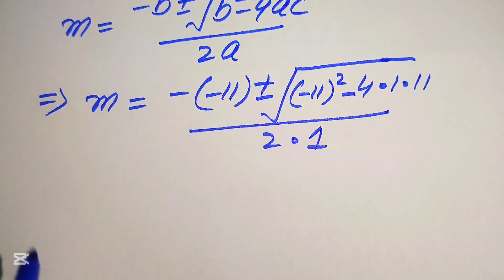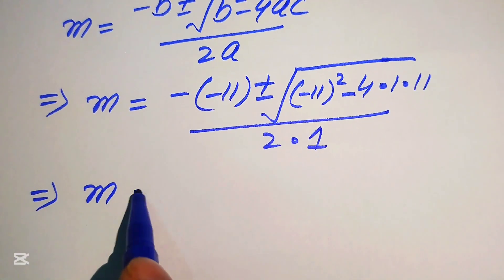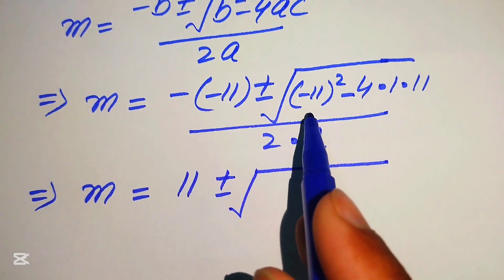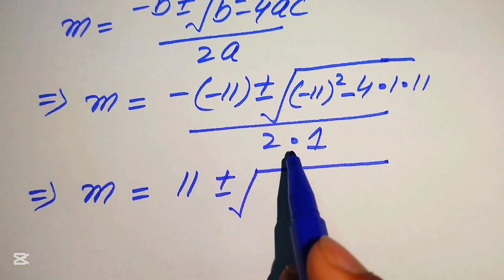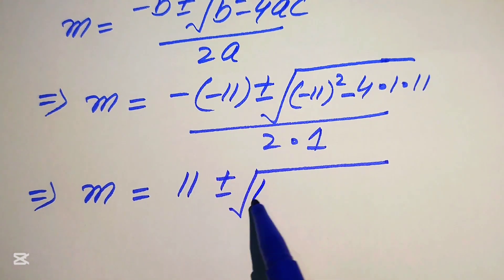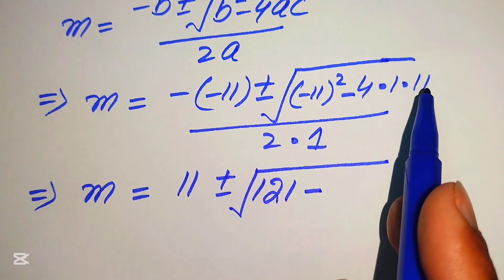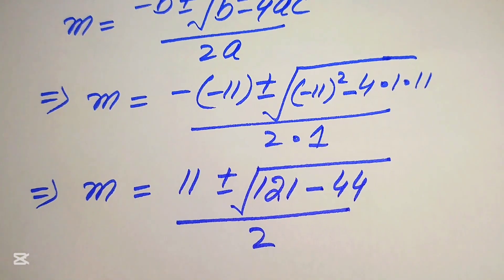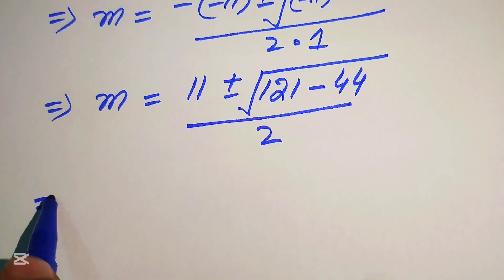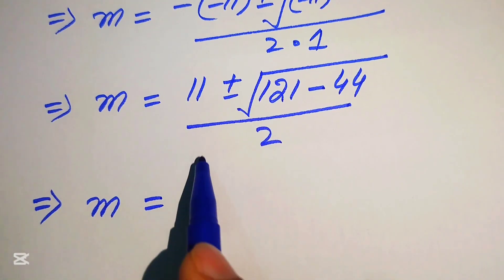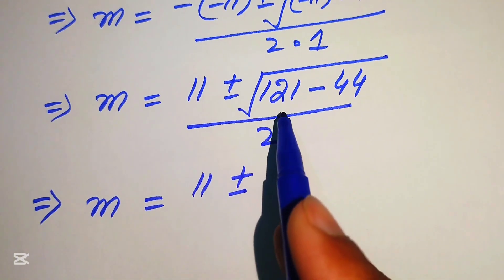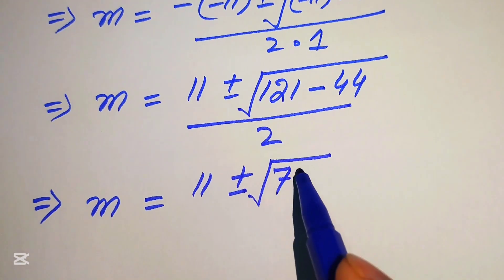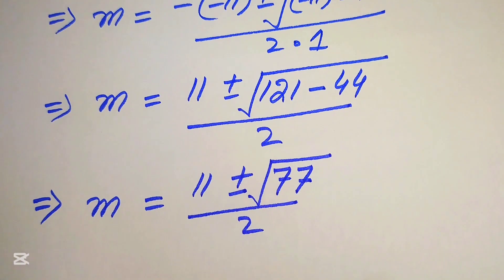So 2a equals 2. In the next step, m equals 11 plus or minus square root of (minus 11) squared minus 4 times 11. We know minus 11 squared equals 121, and 4 times 11 equals 44, divided by 2. So m equals 11 plus or minus square root of 121 minus 44, which is square root of 77, divided by 2.